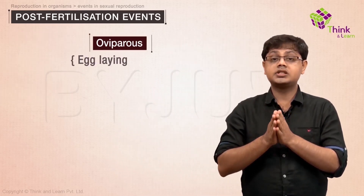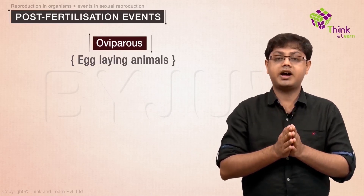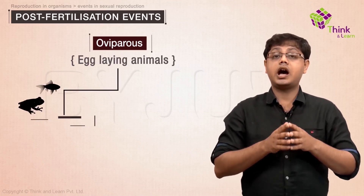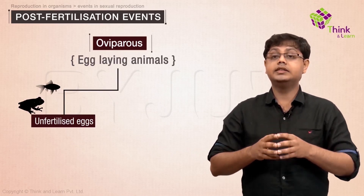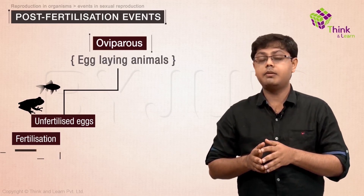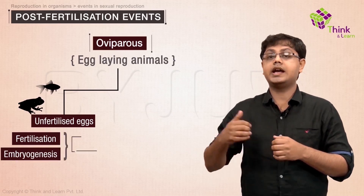Animals can be classified into three types based on the site of embryogenesis and development: oviparous, ovoviviparous, and viviparous. Egg-laying animals are termed oviparous. Fishes and amphibians lay unfertilized eggs, and in these oviparous animals, fertilization and development of the embryo is external.